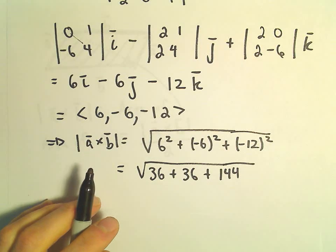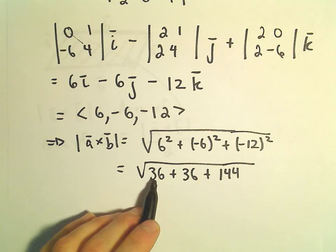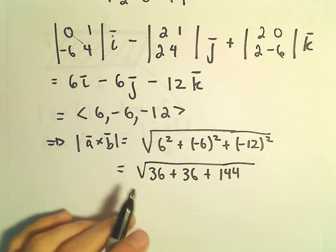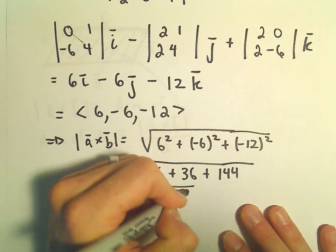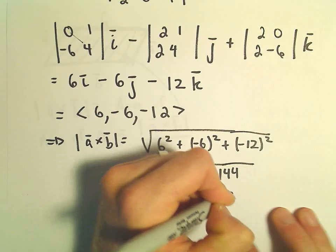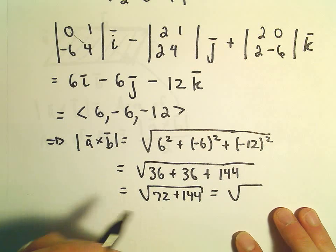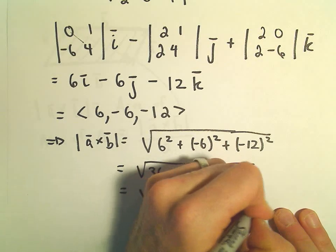So let's see, if we simplify that, 144, I guess, plus 72. That's going to leave us with, let's see. So I guess that'll leave us with the square root of what? How about 216?